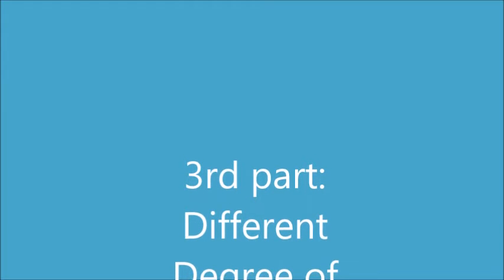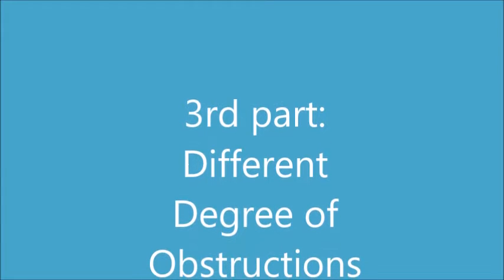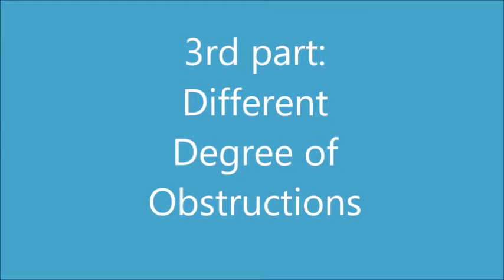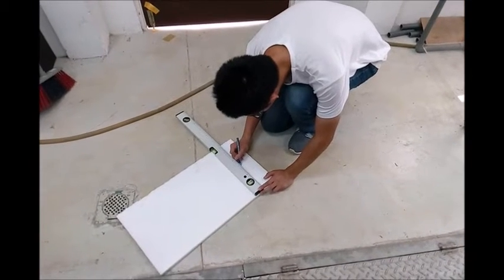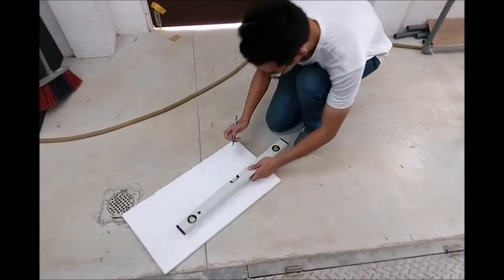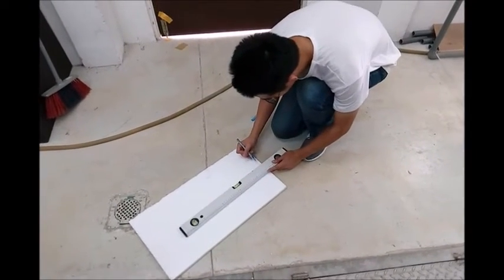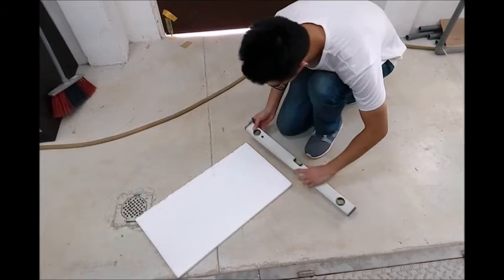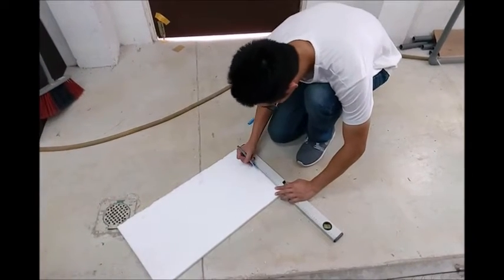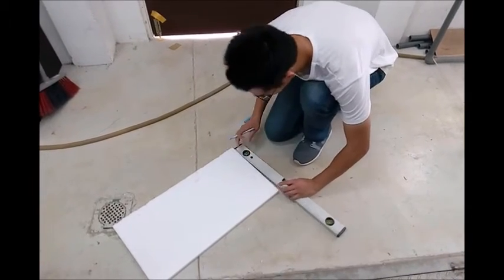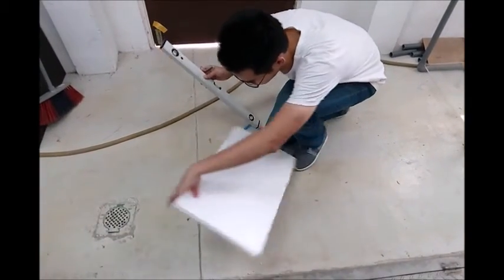For the last part of the experiment, we wanted to find out whether Manning's roughness coefficient varies with different degrees of obstruction. First, we cut the polystyrene into three equal parts in terms of base and width, though not necessarily equal in height. The height of each piece was set to be higher than the flow depth.